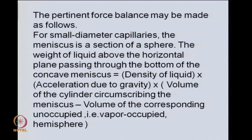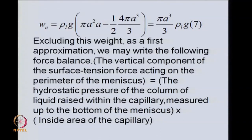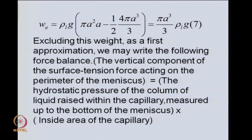We might want to take that into account. In the first approximation we exclude this, and this excluded weight w_e is given by rho_l times g times the quantity in brackets: the volume of the cylinder circumscribing the meniscus — which has area pi*a² and height a since this is approximated by a hemisphere — minus the hemisphere itself, which has volume (1/2)(4*pi*a³/3).